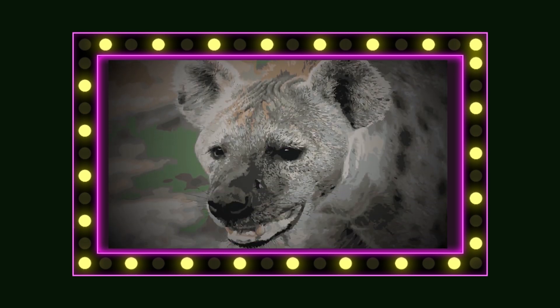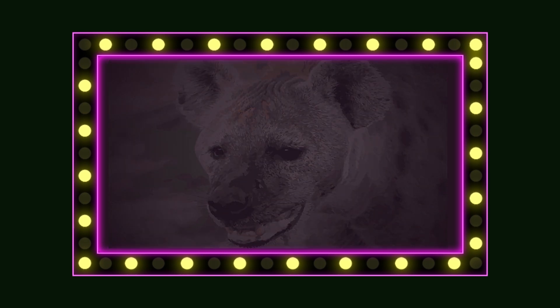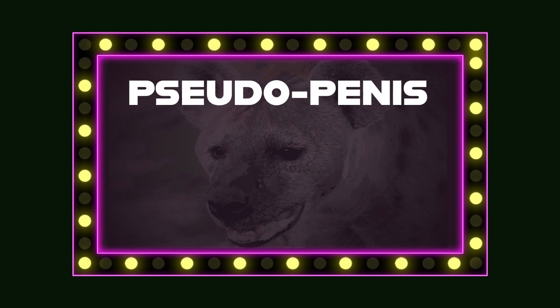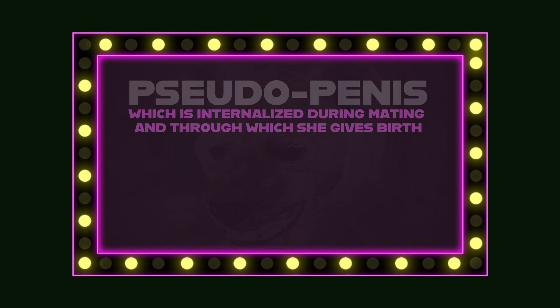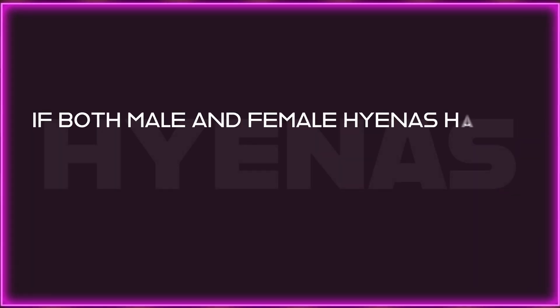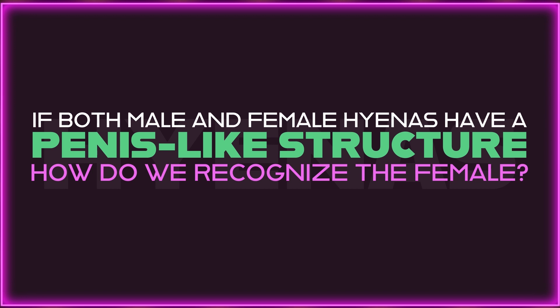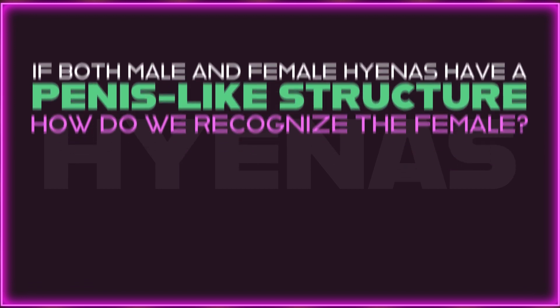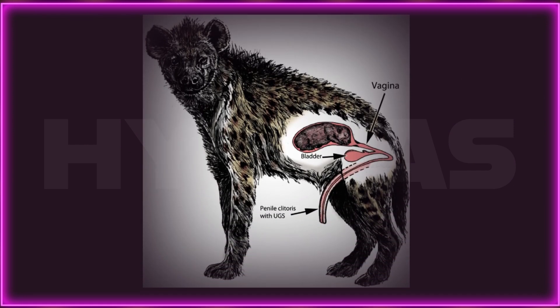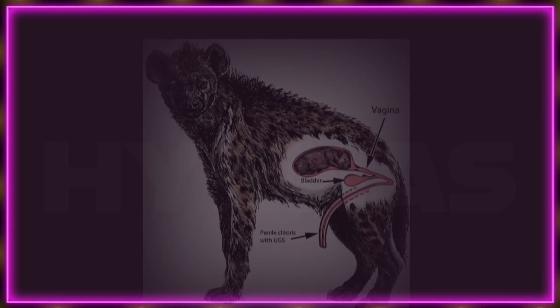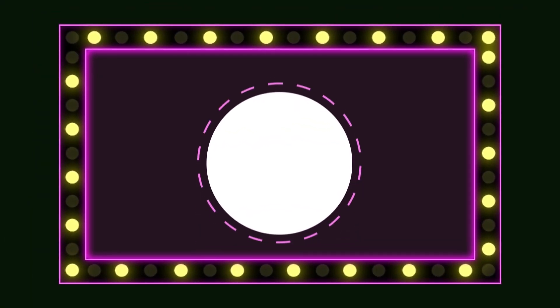Let's move on to hyenas. Female spotted hyenas have a pseudo-penis, which is internalized during mating and through which she gives birth. If both male and female hyenas have a penis-like structure, then how do we recognize the female? Again, it's actually rather simple. As Dr. Hilton says, she's giving birth through a massively overgrown clitoris. What more do you want as an identifying feature? Oh, and she makes large gametes.